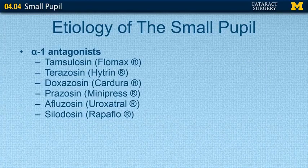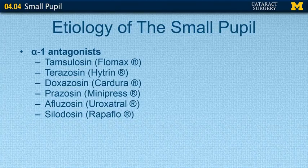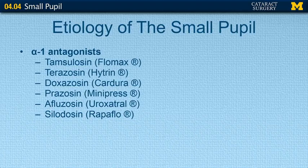The last major category would be alpha-1 antagonists. These are medications often used for blood pressure control or for patients who have prostate issues. It's really important to review their medication history to see if any of these medications are on the list. Even if not currently listed, ask if they've ever been on these medications in the past, because with Flomax, even just a brief episode of use in the past can still have a lasting effect on the pupil.